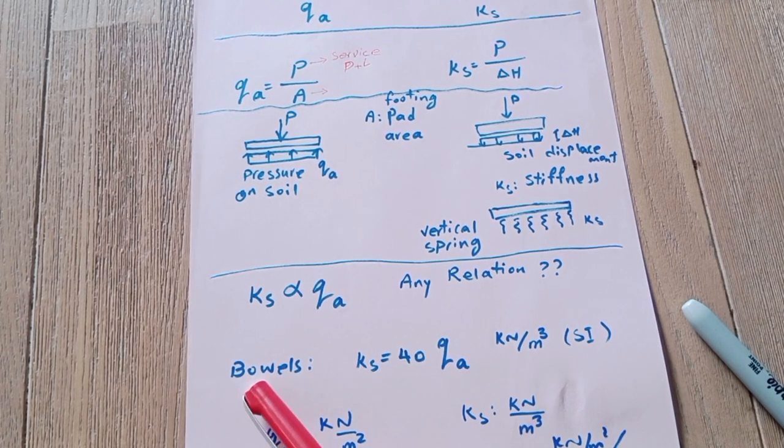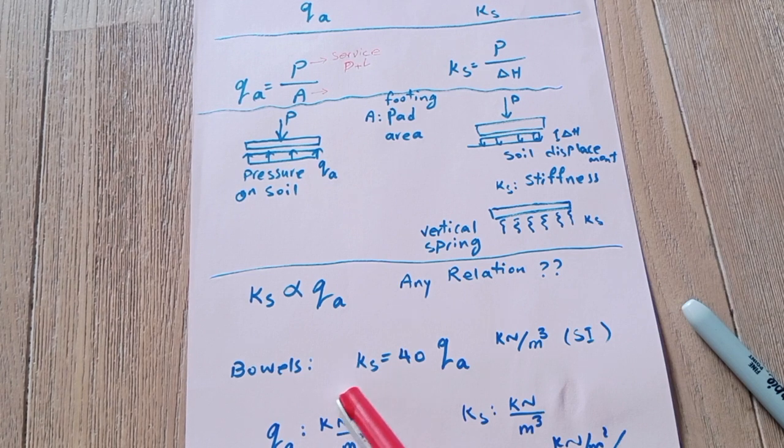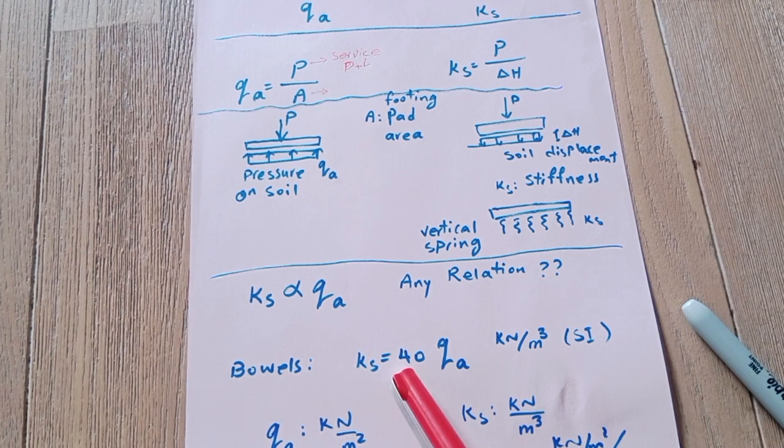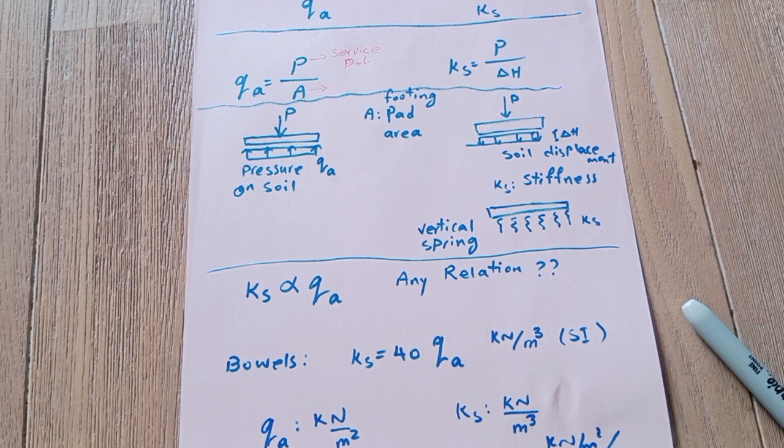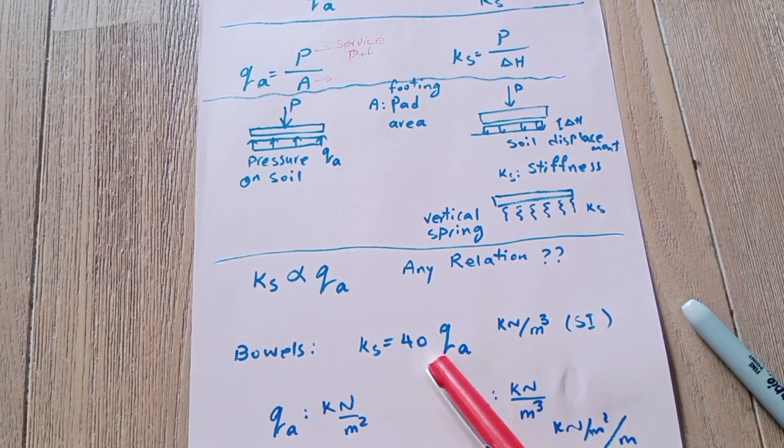Referring to Bowels, ks is 40 times qa. It means that subgrade modulus in SI system is 40 times the bearing pressure of the soil. So if you have qa, you can easily calculate ks, or if you have ks, you can calculate qa to use in the software.